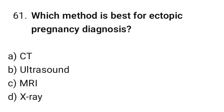Question number 61: Which method is best for ectopic pregnancy diagnosis? The correct option is B: Ultrasound.